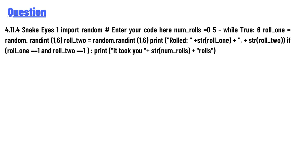Enter your code here. num_rolls = 0. while True: roll_one = random.randint(1, 6). roll_two = random.randint(1, 6). print('Rolled: ' + str(roll_one) + ', ' + str(roll_two)). if roll_one == 1 and roll_two == 1: print('It took you ' + str(num_rolls) + ' rolls')